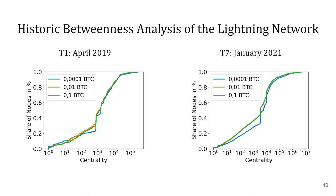According to our data, there are only 346 nodes in the network at this point in time, opposed to 1,361 nodes in January 2021, and of course without taking leaf nodes into account.